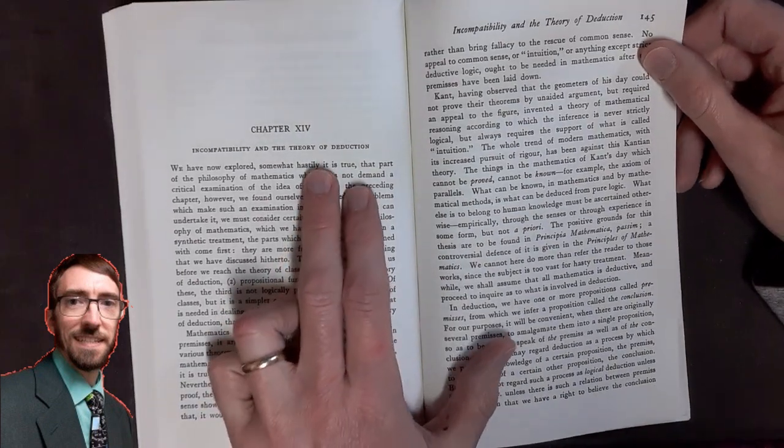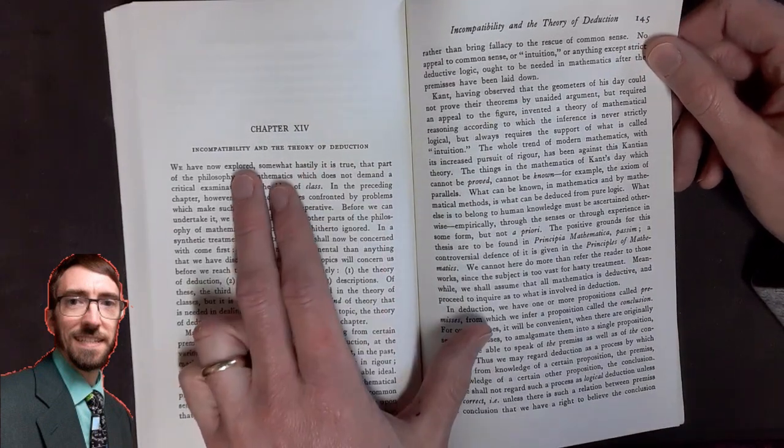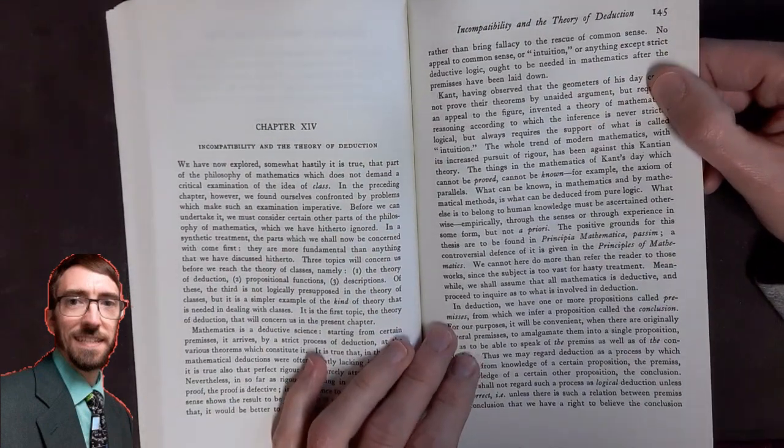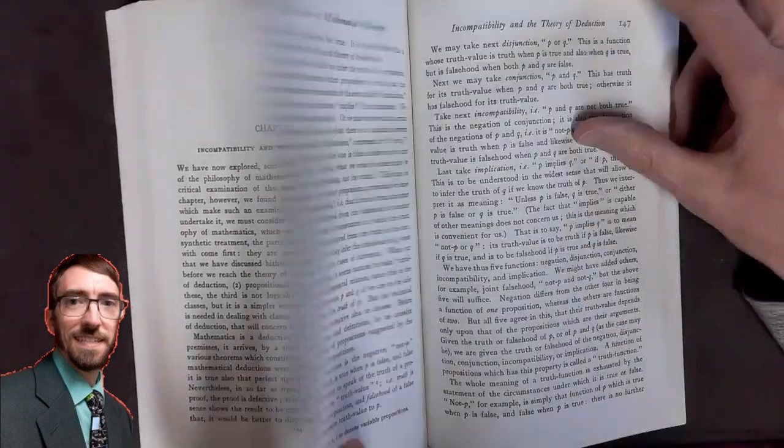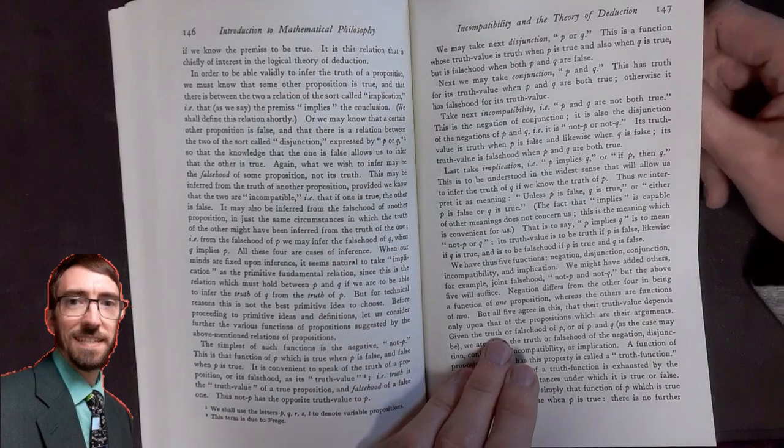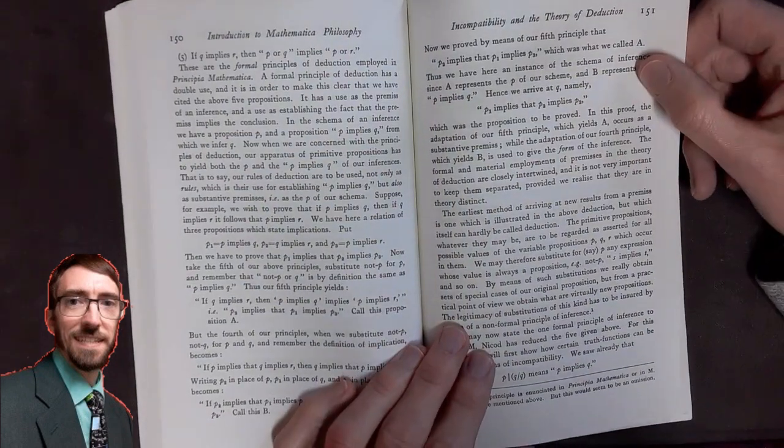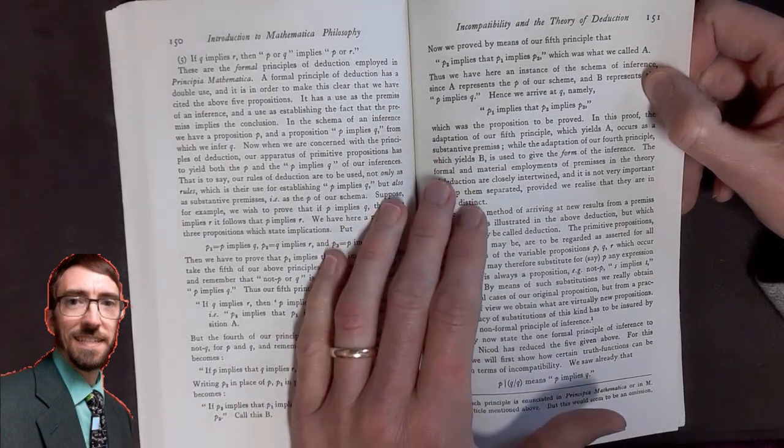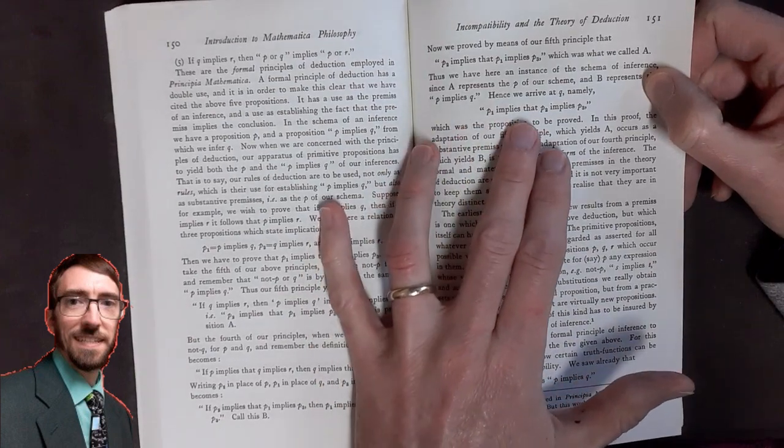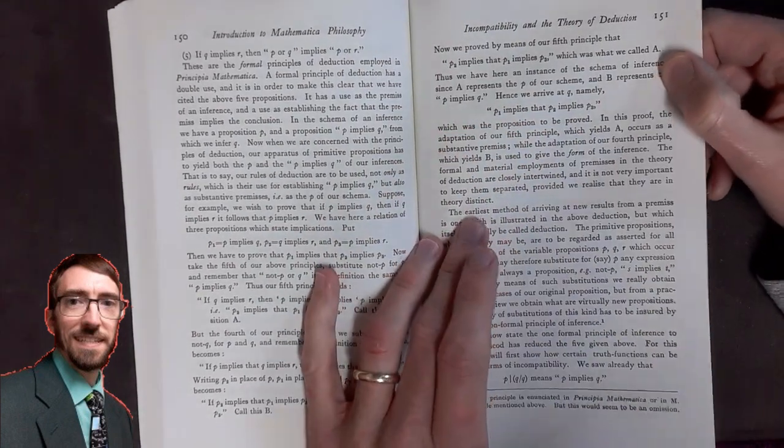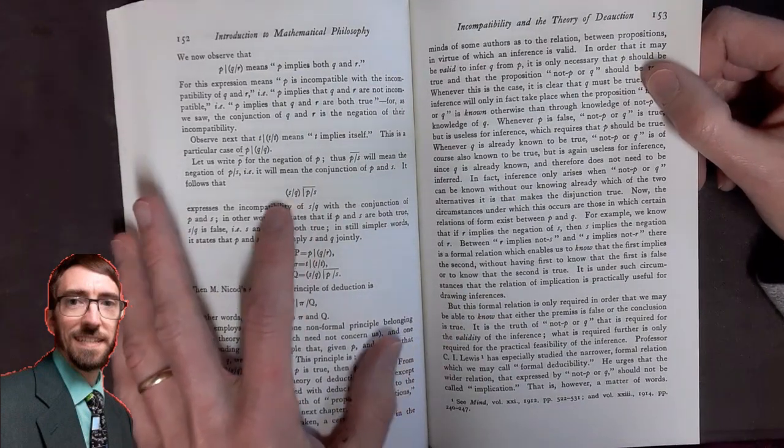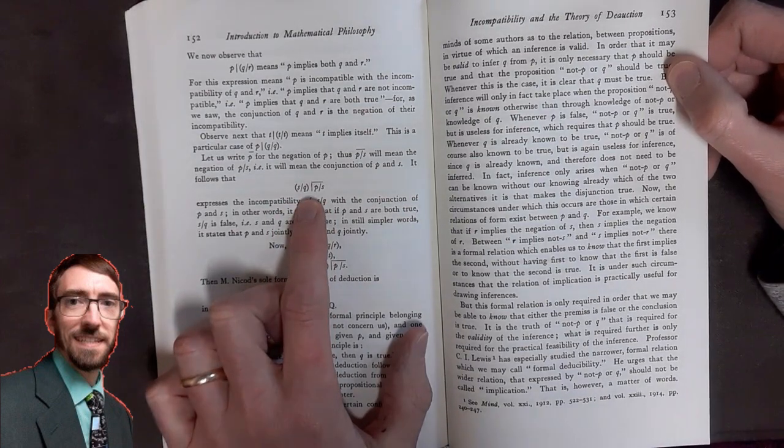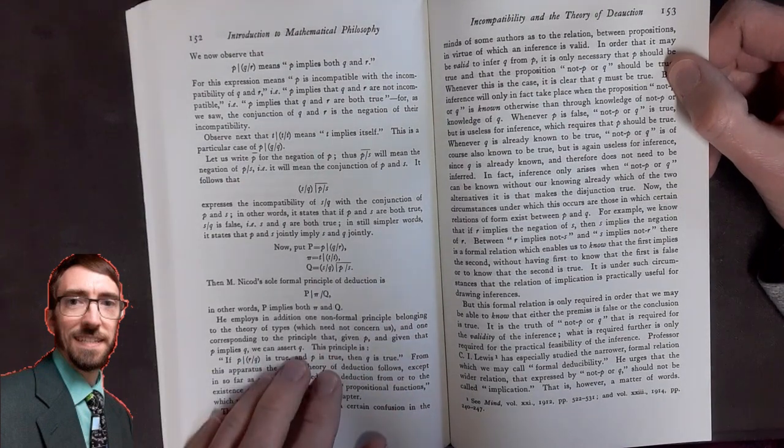As we get into chapter 14, we see the title Incompatibility and the Theory of Deduction. We know deduction and induction are important topics to discuss in mathematics. We see in this chapter some of the classic elementary logic ideas of p sub 1 implies that p sub 2 implies p sub 3. Just of interest, historically, we see the difficulty of the typesetting at the time for the mathematical notation.